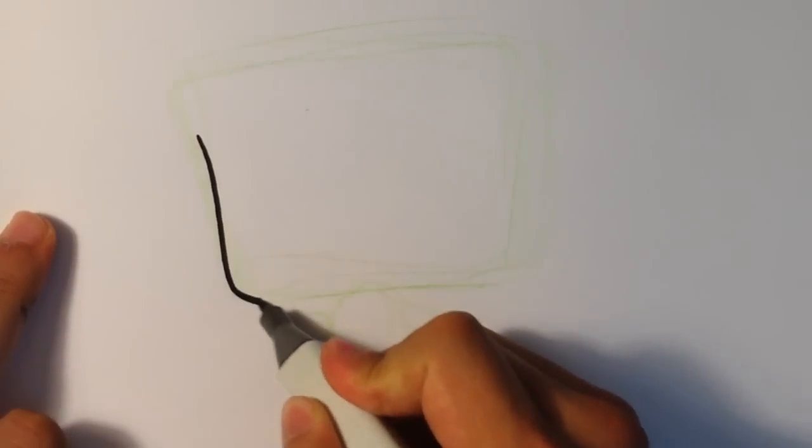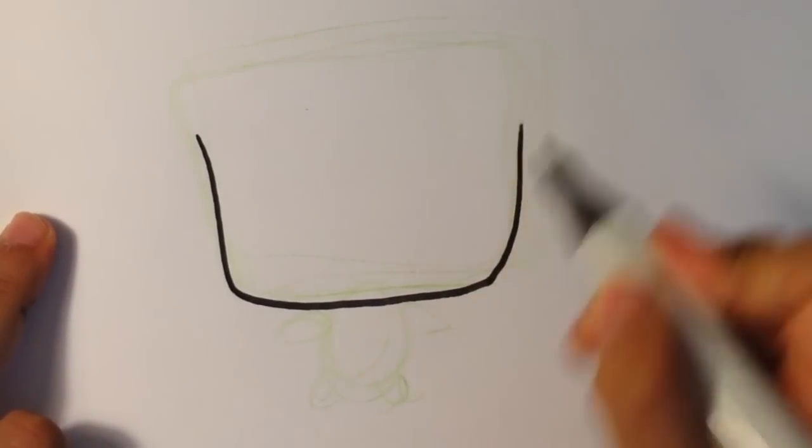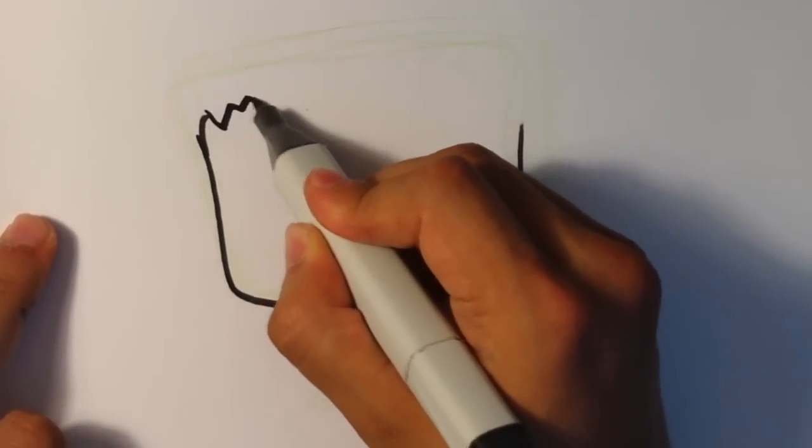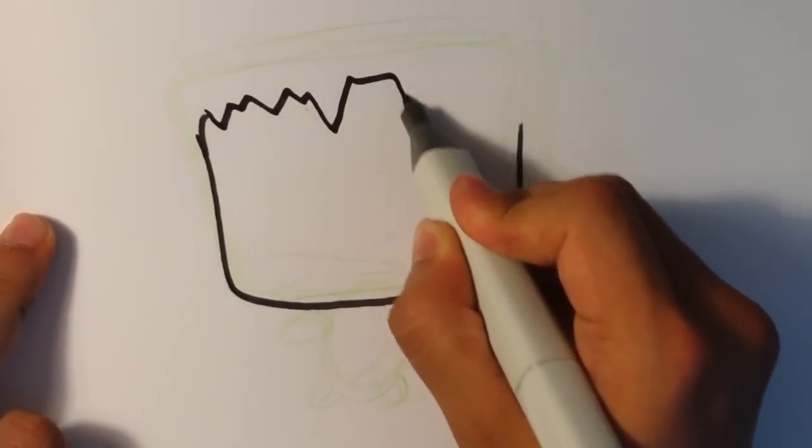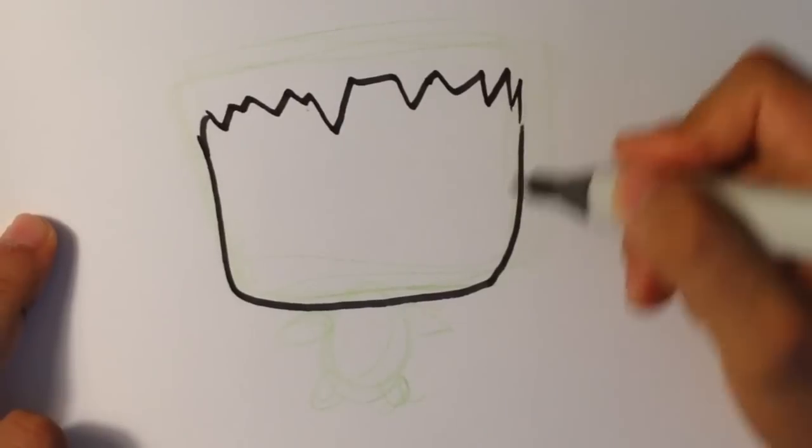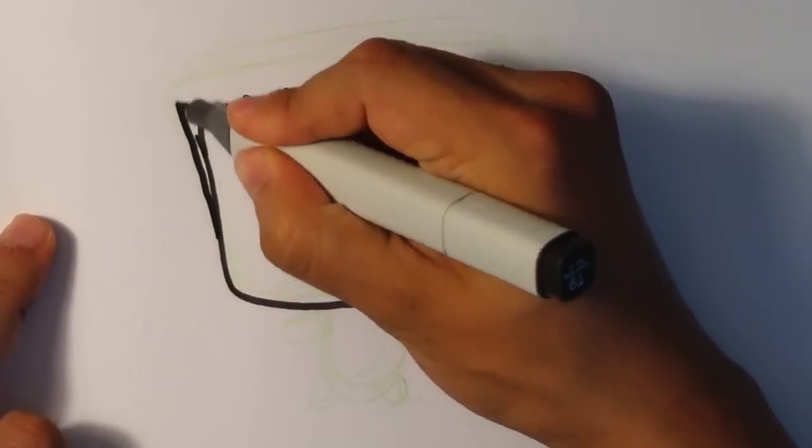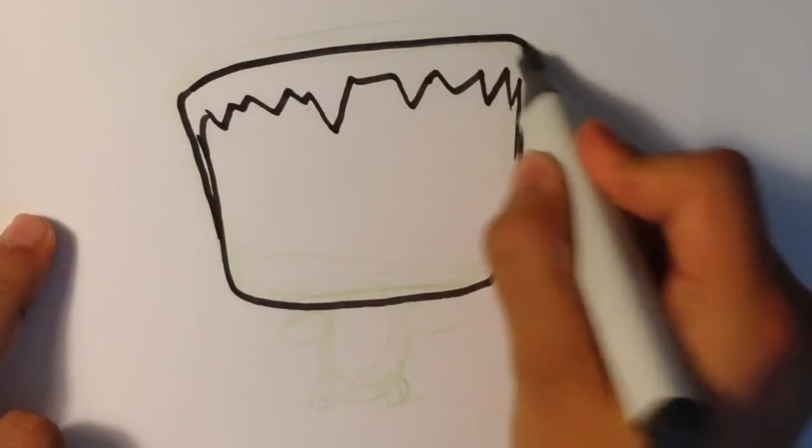But let's start with a square head. Frankenstein has a very, very square head. And I'm going to put this kind of drippiness to his hair, almost like a bunch of cake fell on his head. I'm going to draw that part first. Flat head.